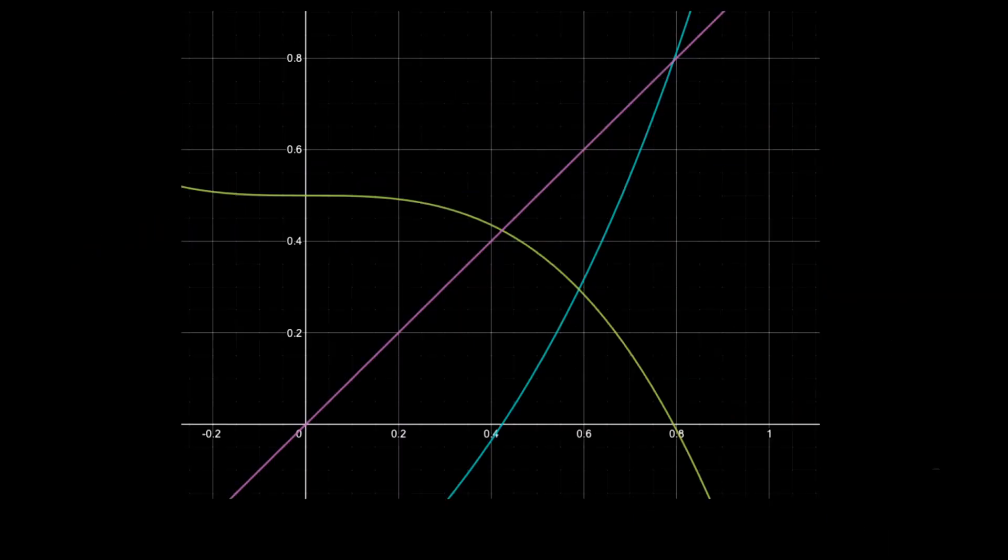So algorithmically, we are going to find our next iteration of x by plugging in our previous value of x into our g equation until our statement x is equal to g is true.